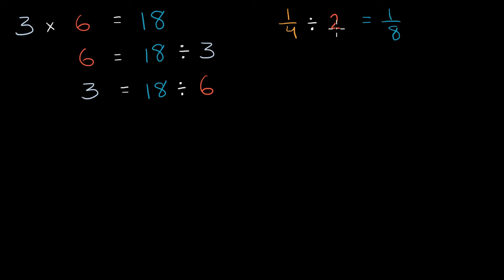Well, if 1/4 divided by two is equal to 1/8, that means that 1/8 times two is equal to 1/4. Let me write this down. Or I could write it like this: I could write that 1/4 is going to be equal to 1/8 times two.